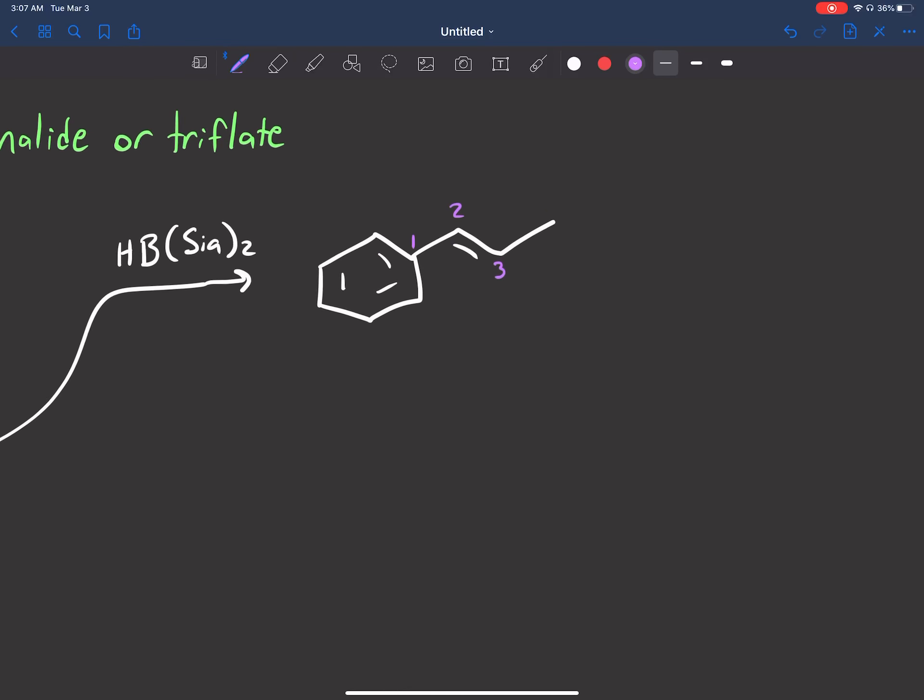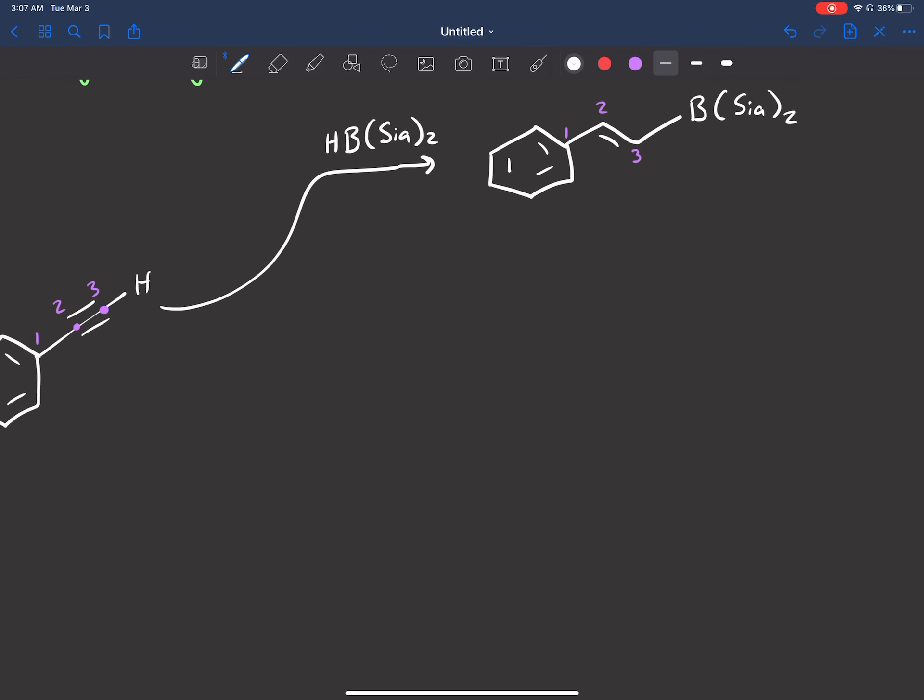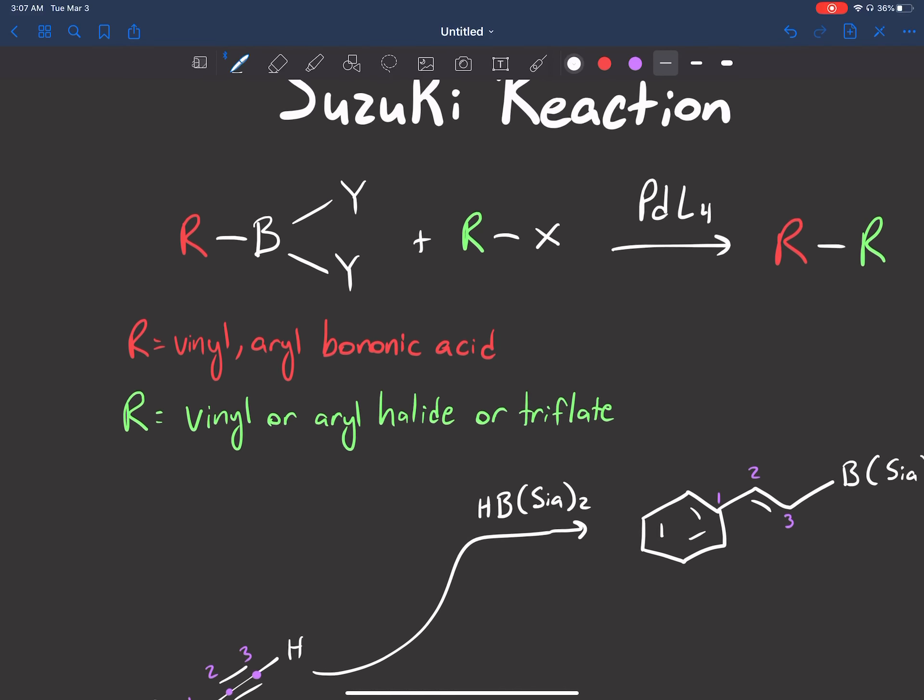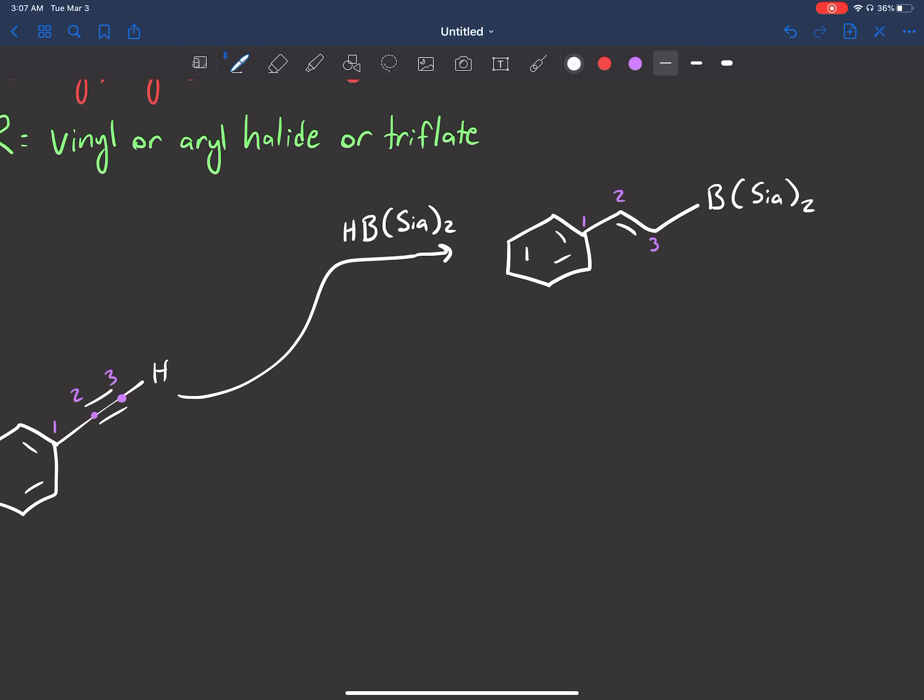So that two-three triple bond became a two-three double bond. And what I have here is boron bound to this SIA group, the disiamylborane, and that two is still there. So we could use that in the Suzuki reaction.